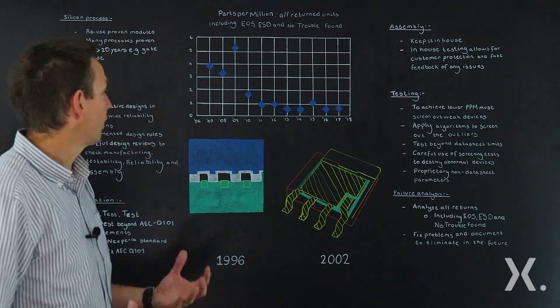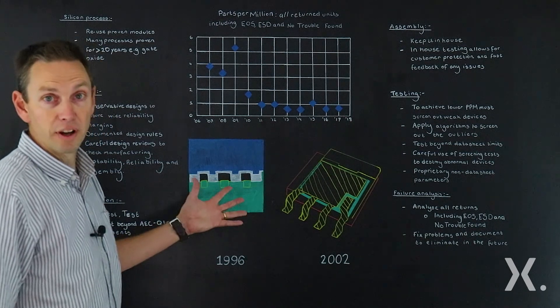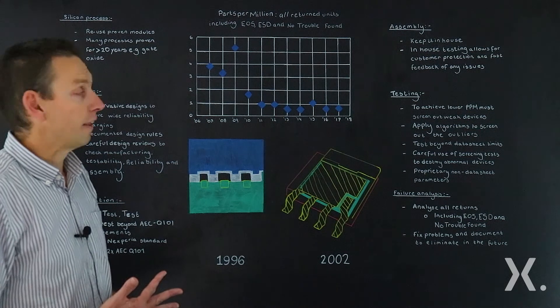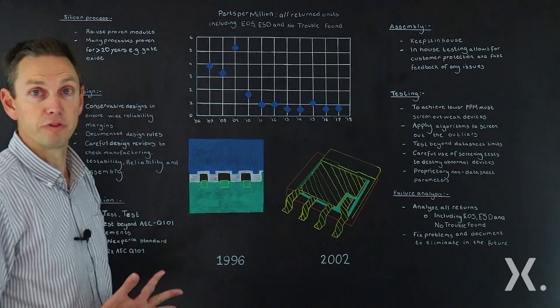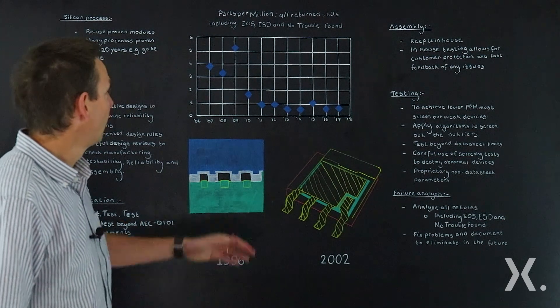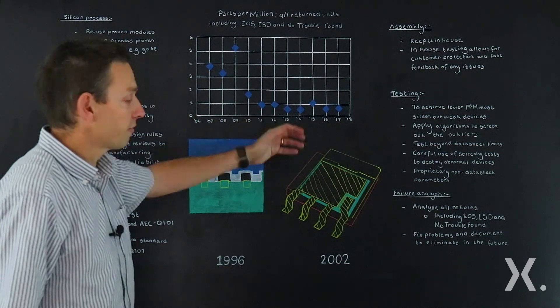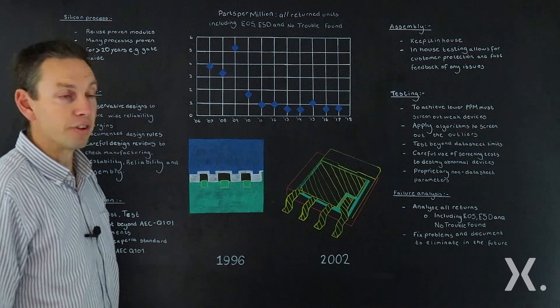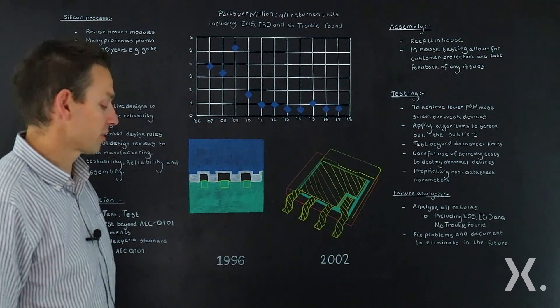But this is the key: by looking at our failures, analyzing those failures, we can find what problems there are, put those problems right, and then stop them happening in the future with our future generations. And what you can see is for the last seven or eight years we've been consistently producing MOSFETs with the performance of less than one part per million. A truly excellent performance.